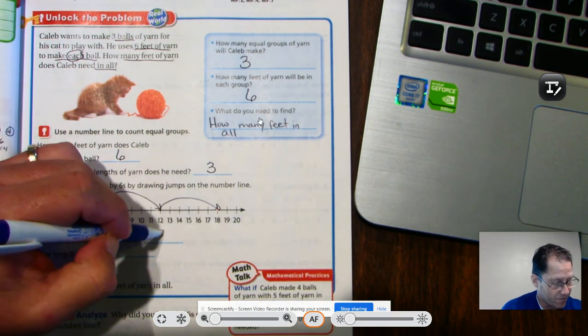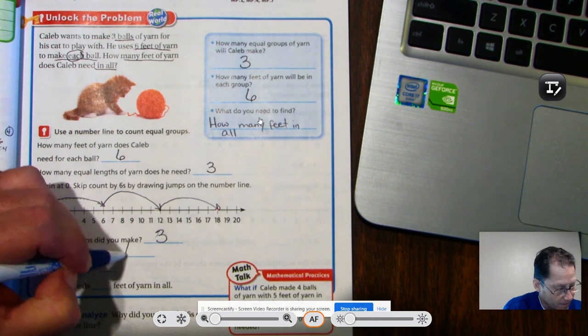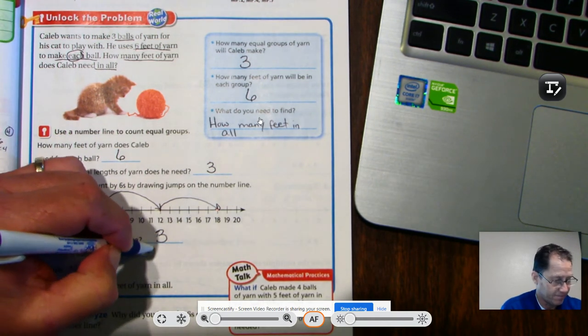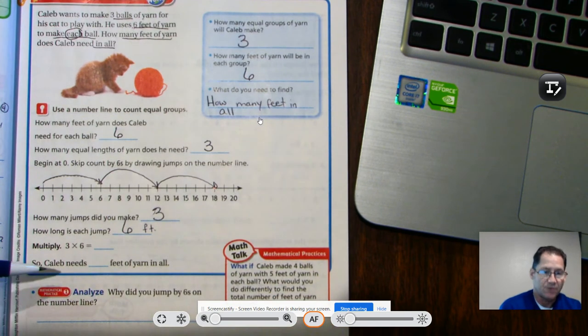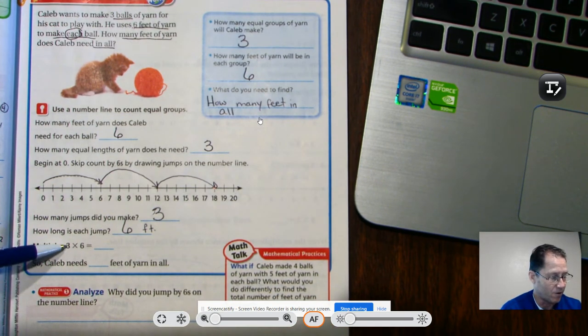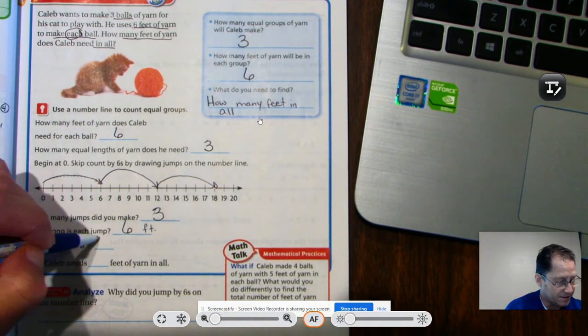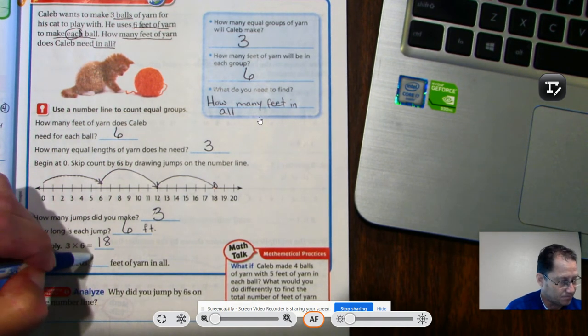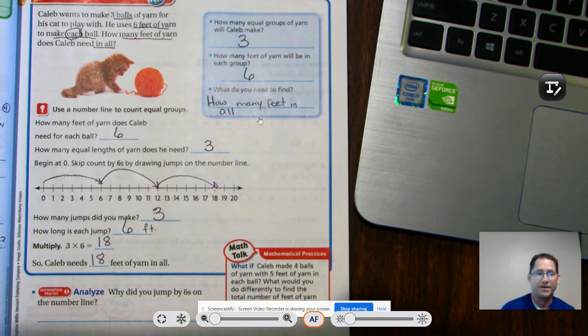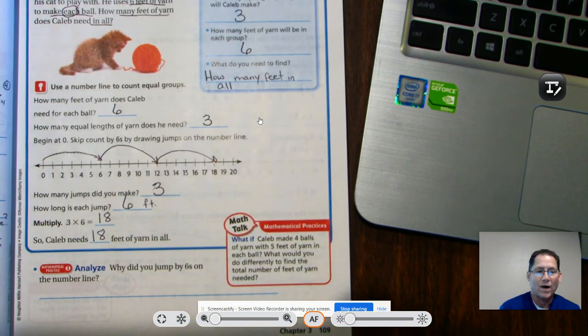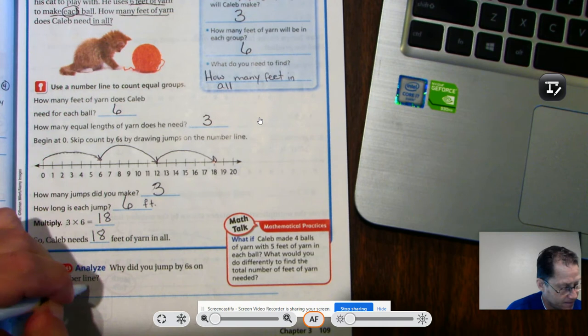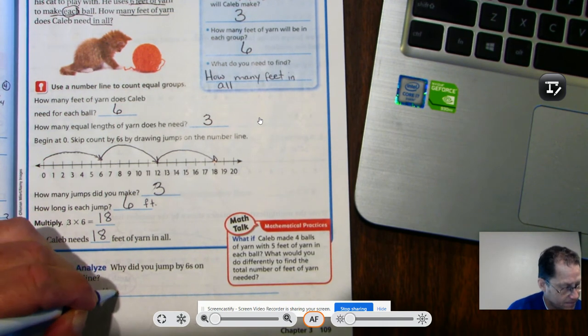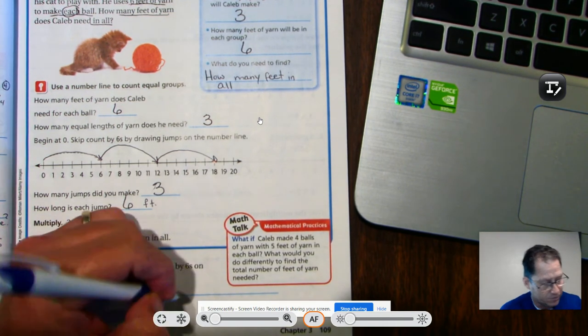How many jumps did we make? Three. Each jump is six feet. So if we were using a multiplication problem, it would be three groups, three balls of yarn times six, which is 18. So Caleb needs 18 feet of yarn in all. Why did we jump by sixes on the number line? Each ball of yarn was six feet.